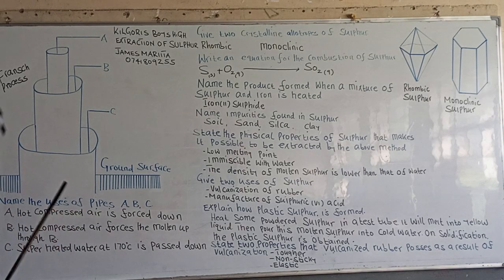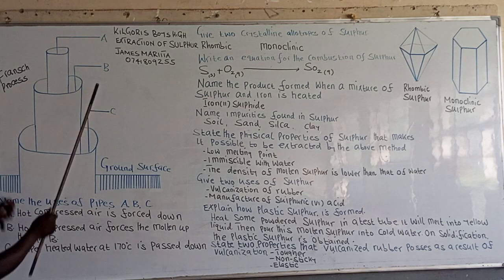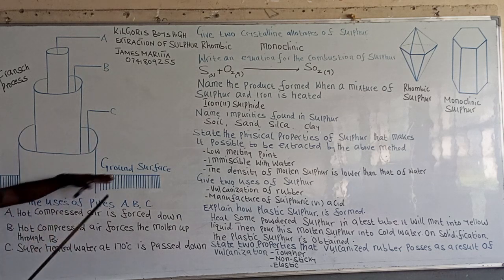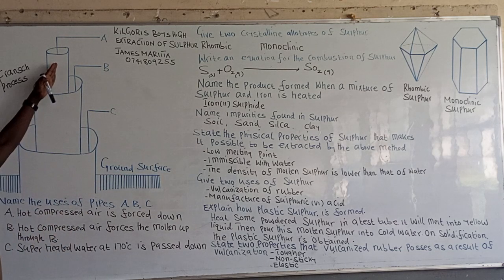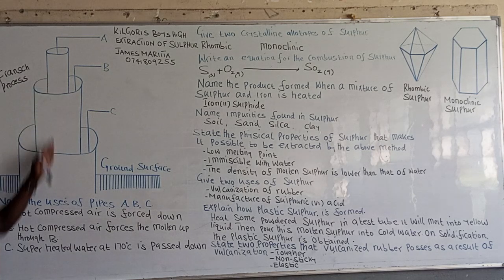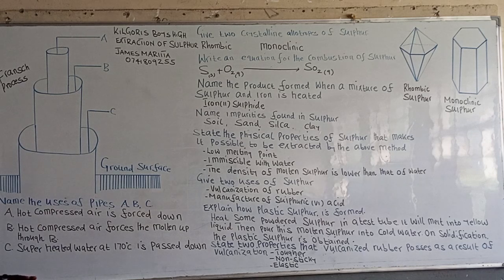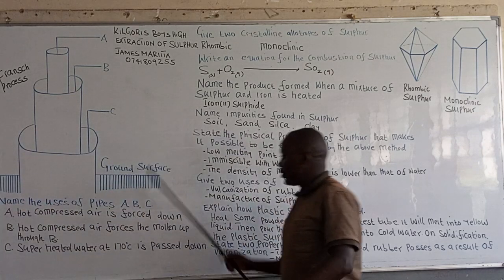Now study the diagram and answer the questions that follow. In the diagram we have pipe A, pipe B, and pipe C. We also have the ground surface marked. Pipe A is the innermost pipe, pipe B is the middle pipe, and pipe C is the outermost pipe. Next, the uses of the pipes.